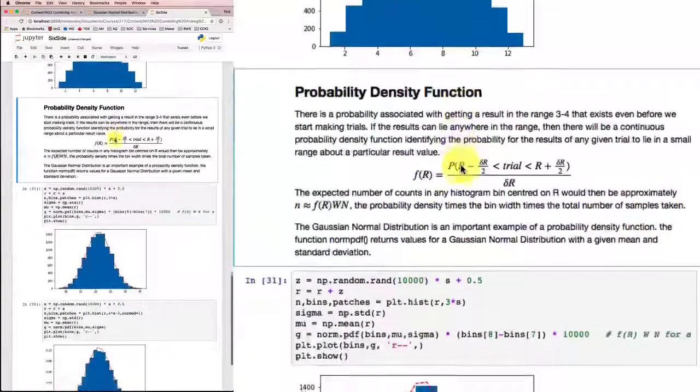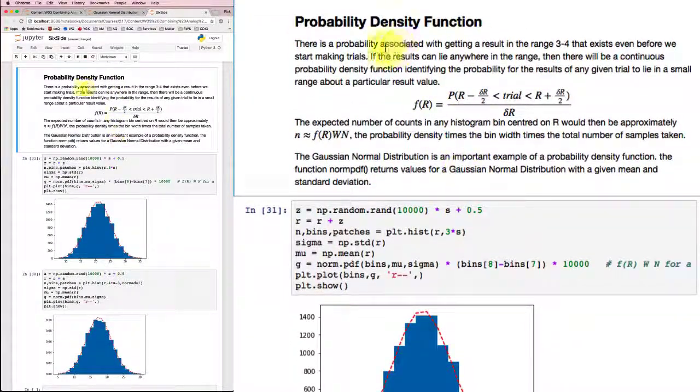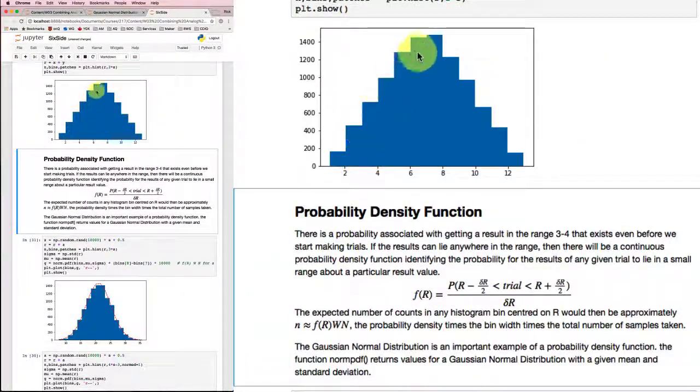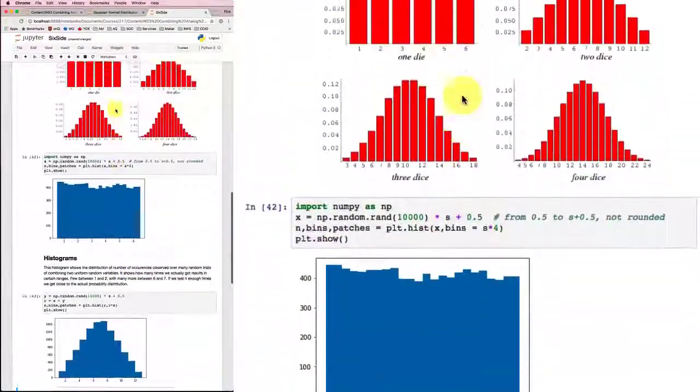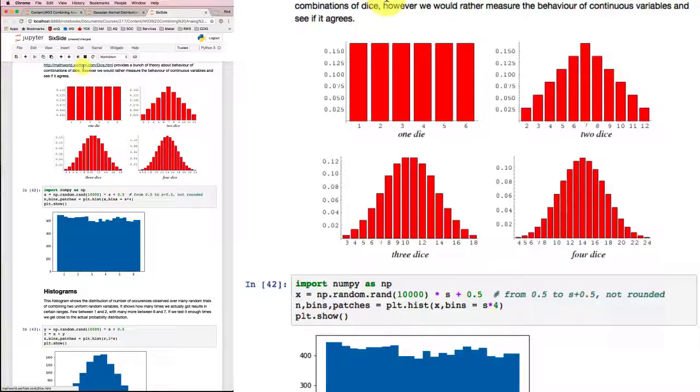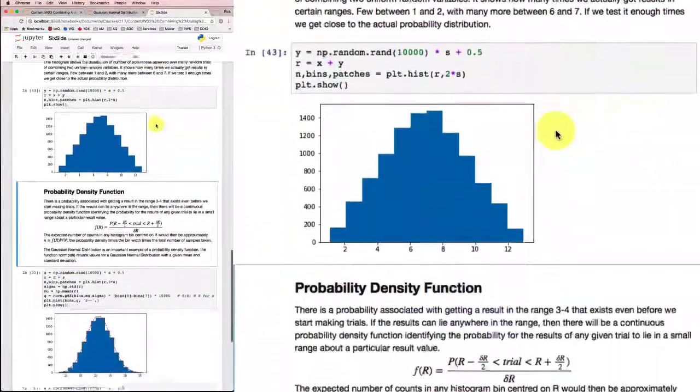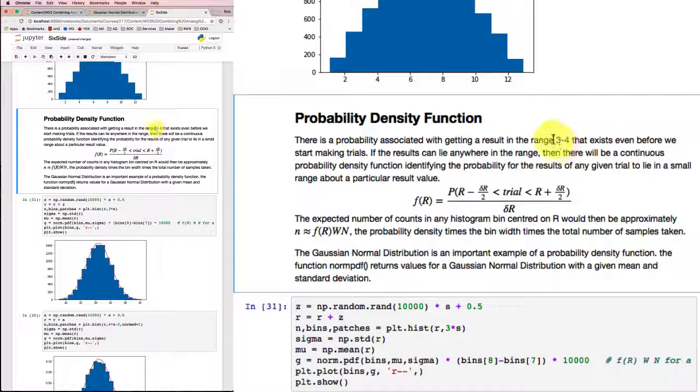Now, at this point, I'd like to introduce the idea of a probability density function. There's a probability associated with getting a result in the range 3 to 4, for example, that exists even before we start making trials. So although this histogram is plotting actually frequency, how many results we got, if we knew something about the process, we could predict what was likely to happen even before we did the test, and predict what the probability was that we'd get a value in the range between 3 and 4. Not very likely.